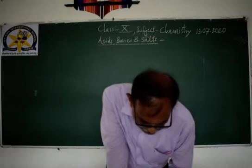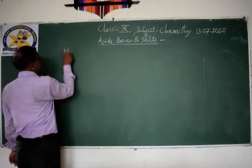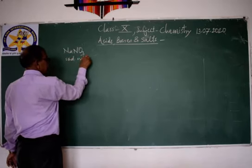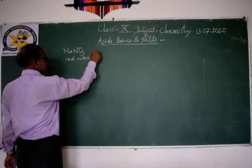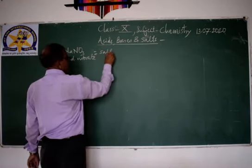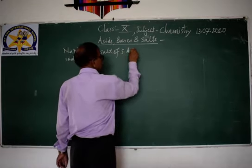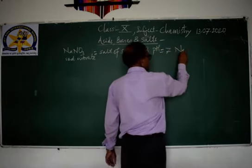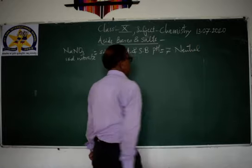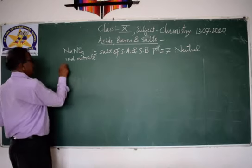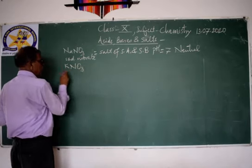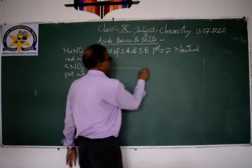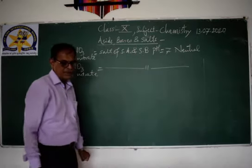There are so many more examples. For example, NaNO3 — sodium nitrate. This is a salt of strong acid and strong base. pH is equal to 7, and the solution is neutral.